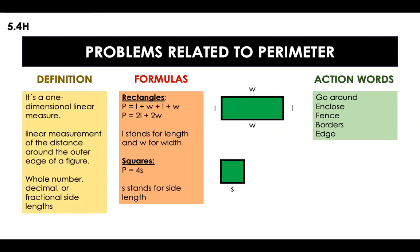But I do want to talk about the action words. Whenever you talk about go around, enclosed, fence, borders, edge, all of those words probably, I'm not saying that it's 100% correct, but probably will be that you're talking about perimeter.